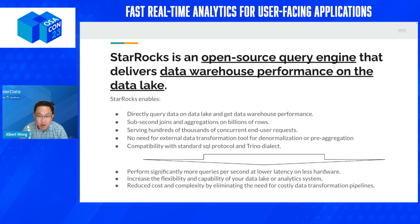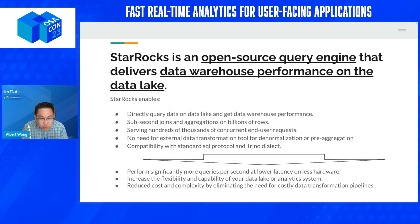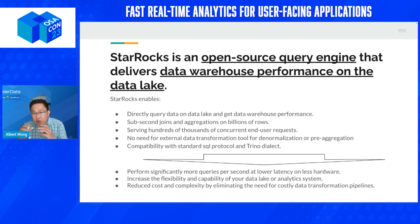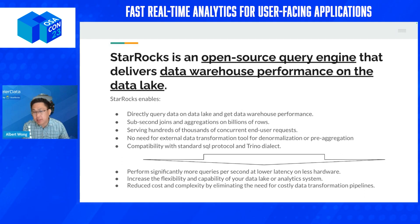New data engineers ask why we denormalize, and the old timers say that's how we've always done it because we couldn't get the performance we needed. But technology has gotten better. We can now do sub-second joins, which reduces the infrastructure needed for the data pipeline, simplifies or even eliminates much of the data engineering overhead, and lets us get more value out of the infrastructure.